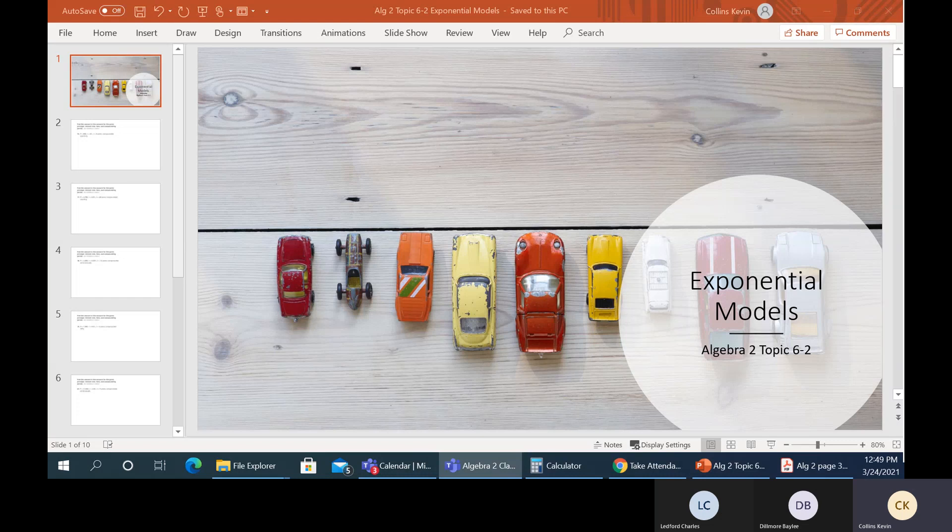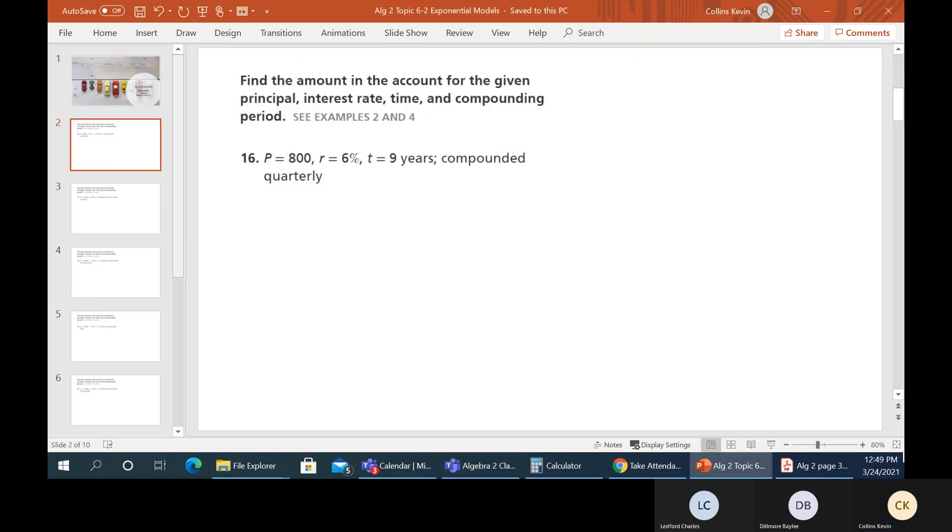OK, so let's go ahead and talk about how these guys work. So here it says P equals 800, R equals 6%, T equals 9 years, compounded quarterly. I guess we need a formula, don't we? So they don't pretty much do this anymore. Pretty much everything is compounded continuously, and actually that's easier than what we're going to do here. We'll get to some problems like that here as well. But let me write the formula down and break down what everything is.